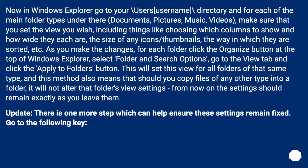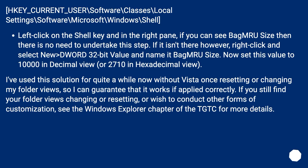Update: There is one more step which can help ensure these settings remain fixed. Go to HKEY_CURRENT_USER\Software\Classes\Local Settings\Software\Microsoft\Windows\Shell. Left-click on the Shell key, and in the right pane, if you can see BagMRU Size then there is no need to undertake this step. If it isn't there, right-click and select New > DWORD (32-bit) Value and name it BagMRU Size. Set this value to 10,000 in decimal view, or 2710 in hexadecimal view. This solution has been used for quite a while without Vista once resetting or changing folder views, so it works if applied correctly. If you still find your folder views changing or resetting, or wish to conduct other forms of customization, see the Windows Explorer chapter of the TGTC for more details.